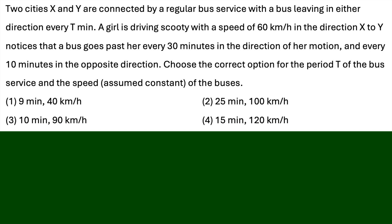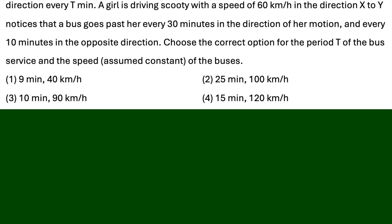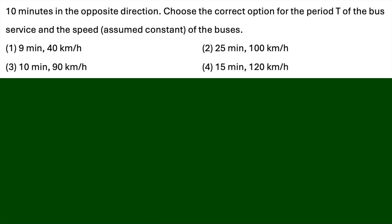The speed of the scooty is 60 km/h. When the bus is crossing the scooty — when they are moving in the same direction — it takes 30 minutes. When in the opposite direction, the time is 10 minutes. We convert 30 minutes to hours: 30 minutes equals 1/2 hour, which we call t1.